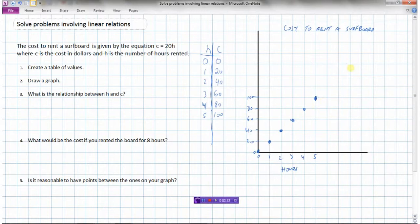And the points do lie in a straight line. So we've got our table of values. We've got our graph. Whoops, I forgot to label this axis. So this is cost. And my units are dollars.